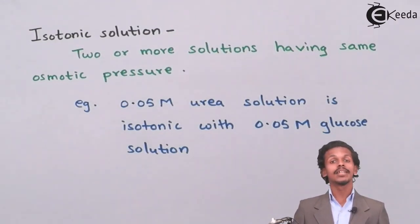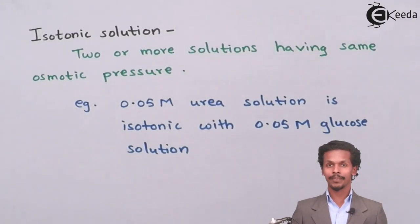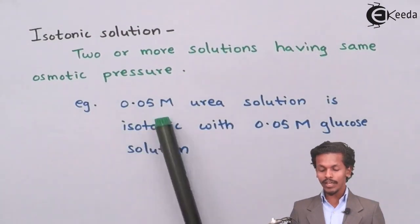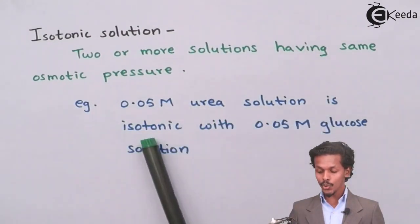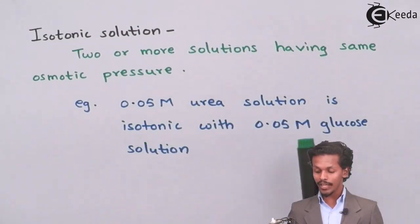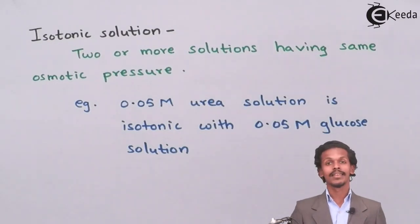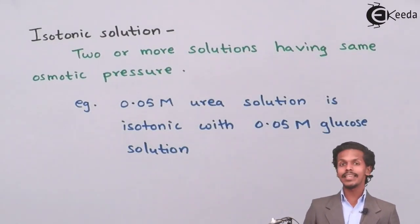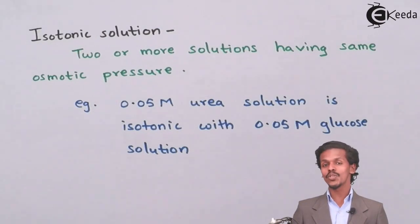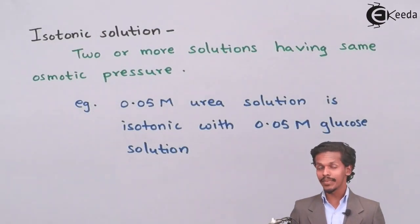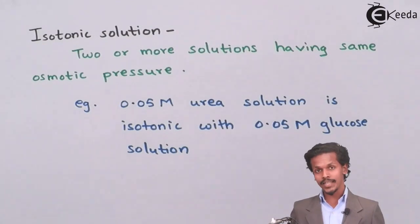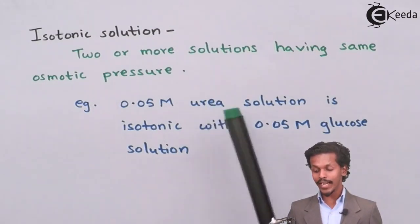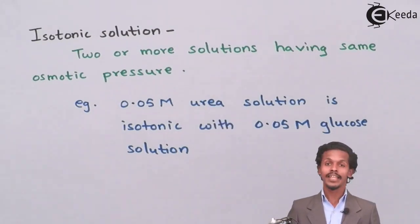The example given is 0.05 molar urea is isotonic with 0.05 molar glucose solution. As you can see, the integer 0.05 is the same in both cases, and the chemical substances used are different: urea and glucose.